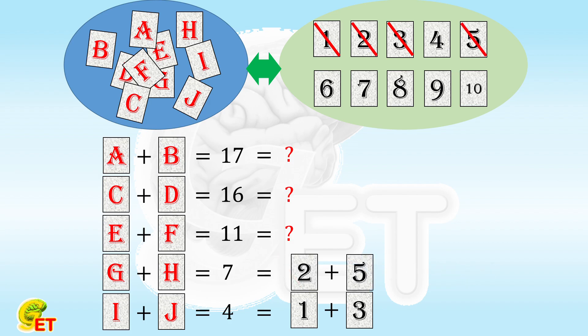After 1, 2, 3 and 5 are all removed, 11 can only be written as 4 plus 7.